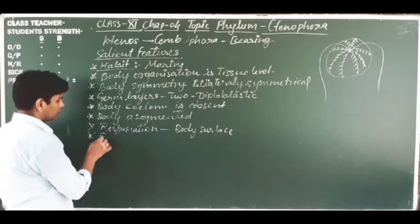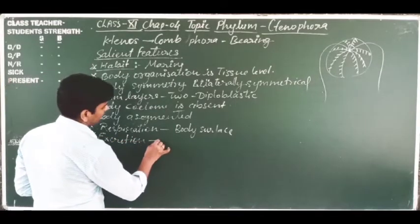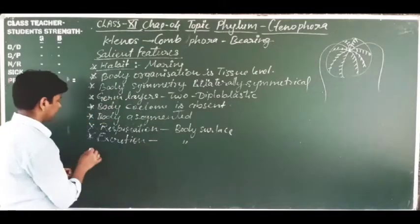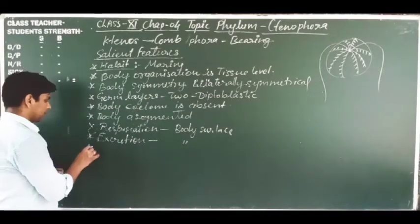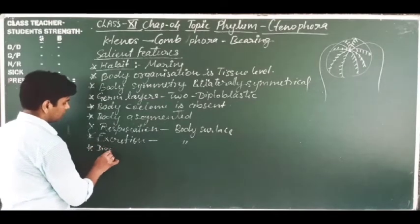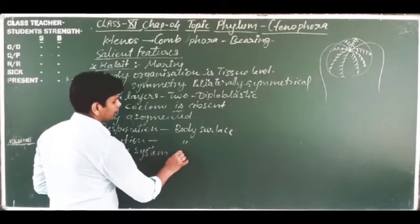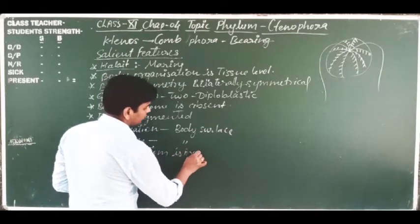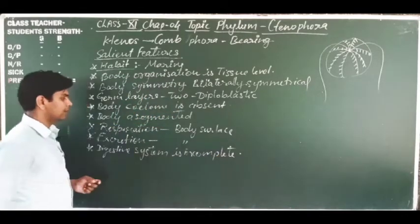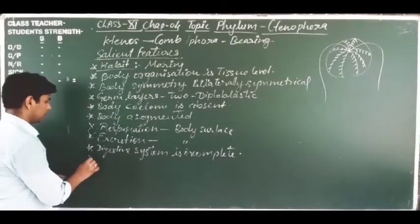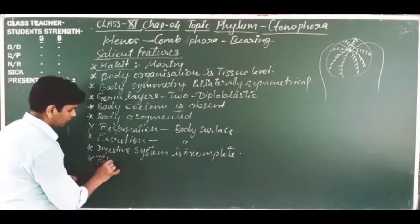Respiration occurs through the body surface. Circulation is absent in these animals. Excretion also occurs through the body surface. The digestive system is incomplete — an incomplete digestive system is found in Ctenophora.